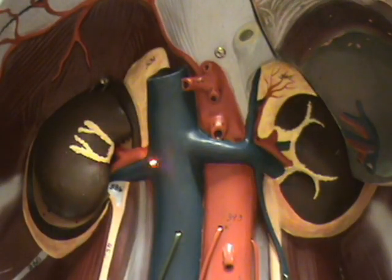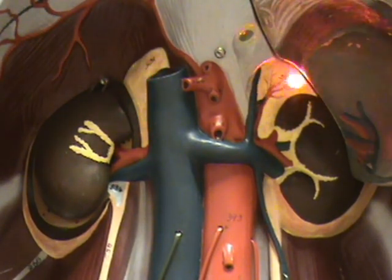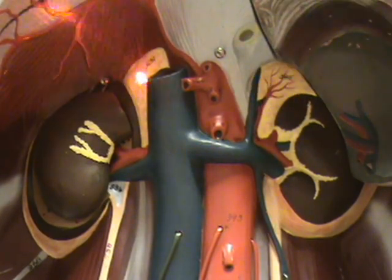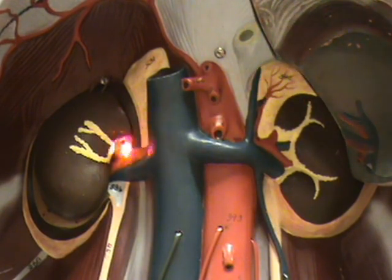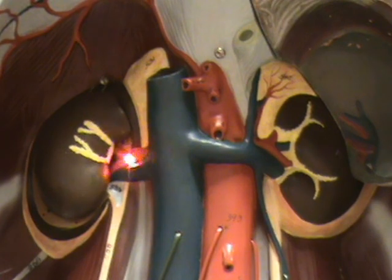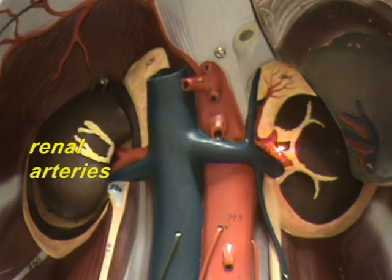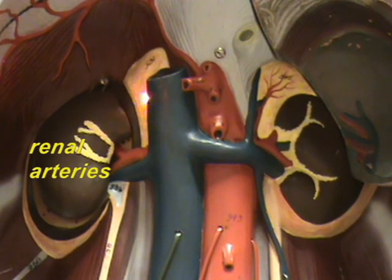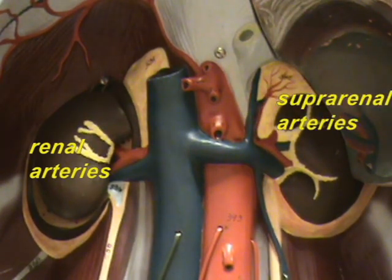The right and the left kidney you can see on either side of the abdominal aorta, and associated with the superior poles of these kidneys we have the suprarenal glands, also known as the adrenal glands. Each of these are supplied with blood coming from the abdominal aorta. The arteries supplying the kidneys are called the renal arteries — you have the left renal artery and the right renal artery. The arteries supplying the adrenal glands are referred to as the suprarenal arteries, and you can see them right over here.